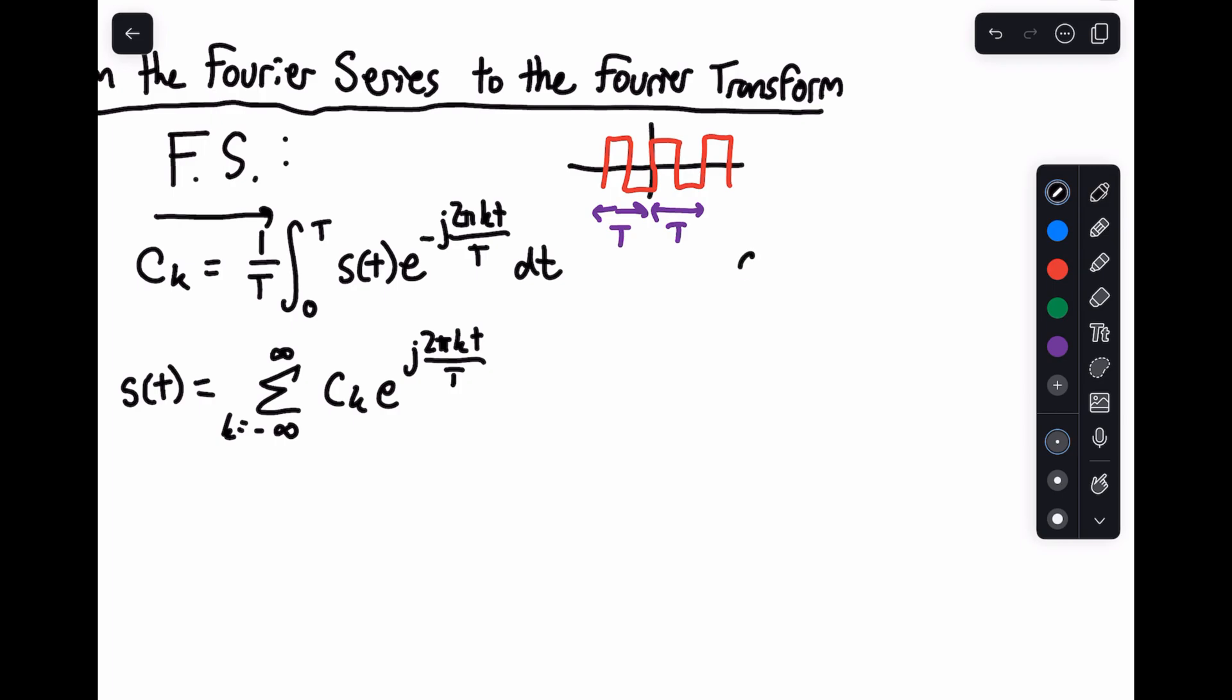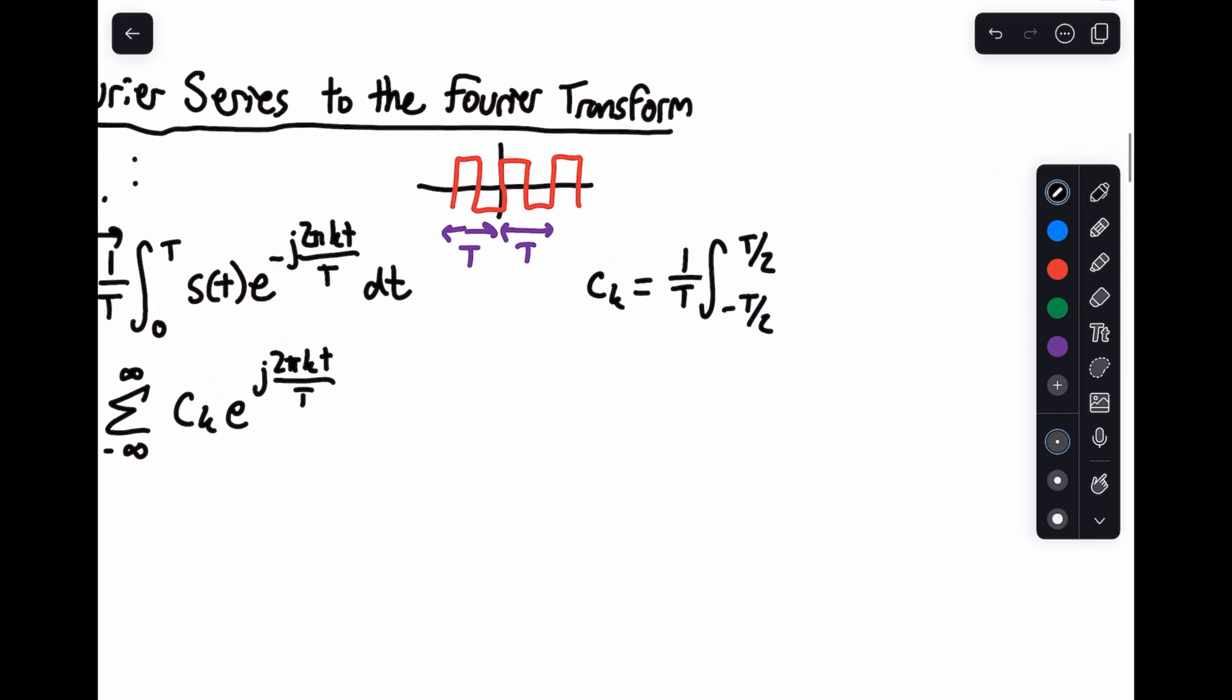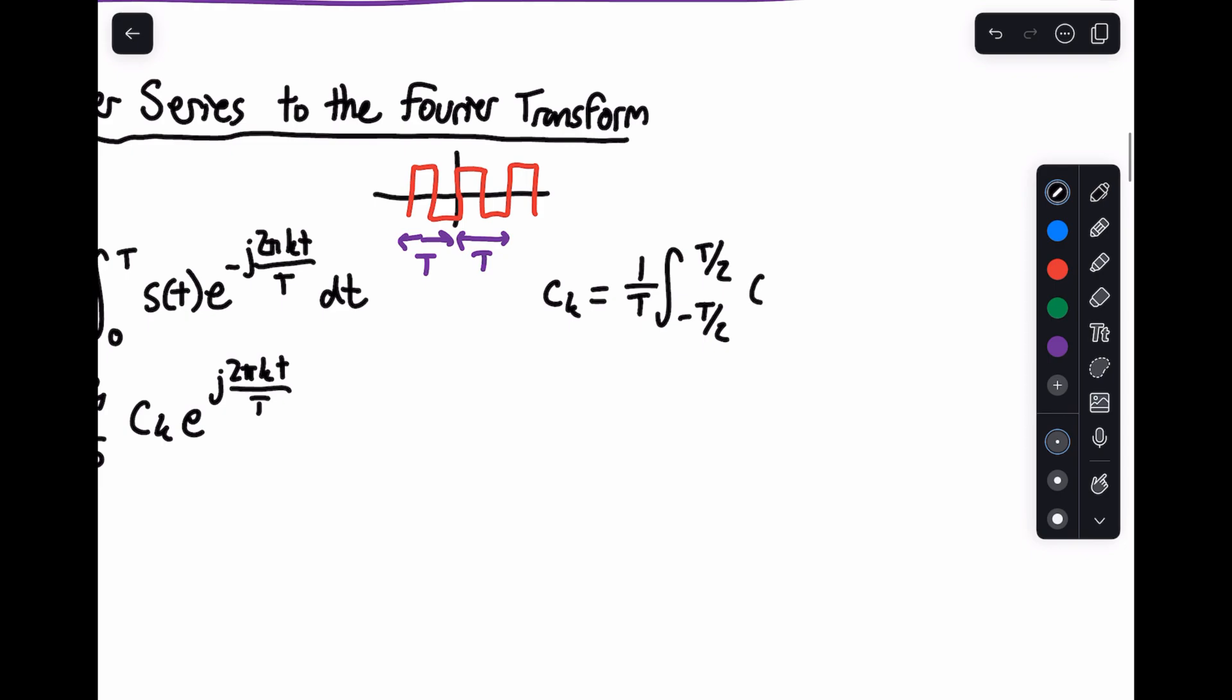So first notice that we can write this just as easily as c sub k equals 1 over T times the integral from minus T over 2 to T over 2. We're still integrating over a single period, so this is going to be fine. And we have what we had before: s(t) e to the minus j 2π kt over T, dt.